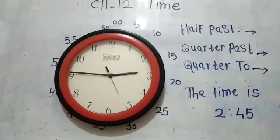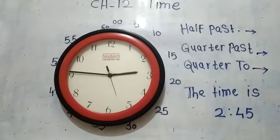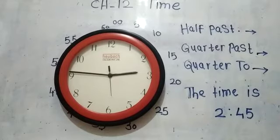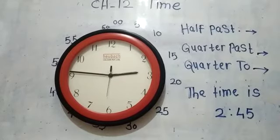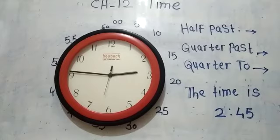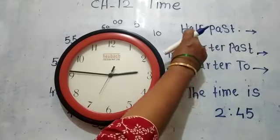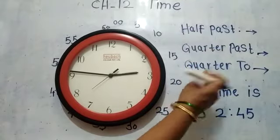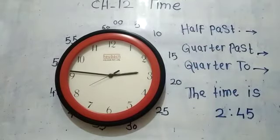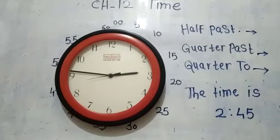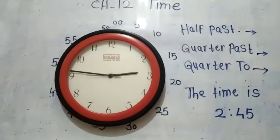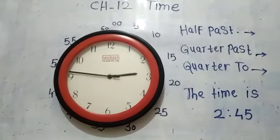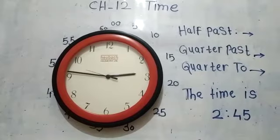So children, today we learned how to tell the time: o'clock time, half past time, quarter past time, and quarter to time. I hope you understood about time. Thank you children.